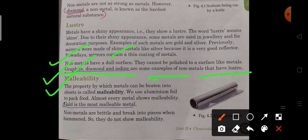Malleability: Malleability is the property by which the metals can be beaten into sheets. We use aluminum foil for food packing. Gold is the most malleable metal. Non-metals are brittle. They break down into pieces when being hammered, so they do not have the property of malleability.